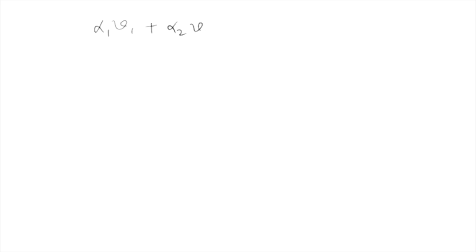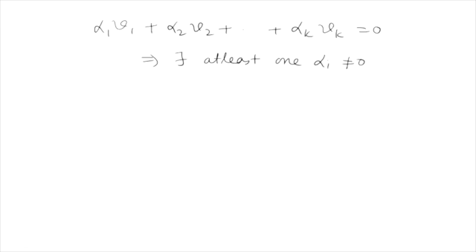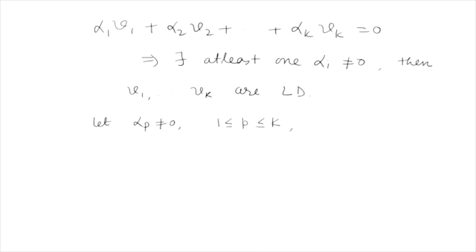If α₁v₁ + α₂v₂ + ... + αₖvₖ = 0 and there exists at least one αᵢ which is not equal to zero, then v₁, v₂, ..., vₖ are called linearly dependent. Let us say that αₚ is the scalar which is not equal to zero, where p is some index between 1 and k.